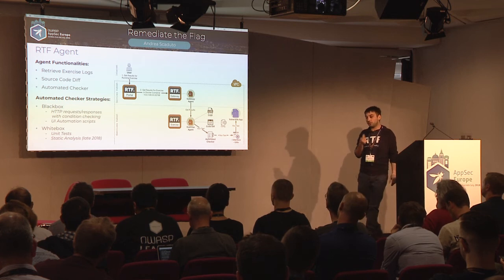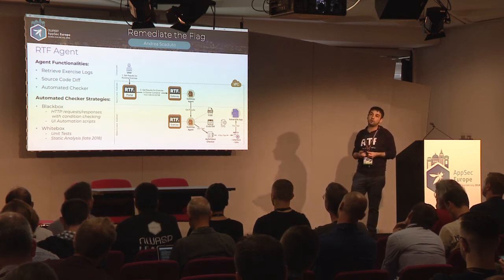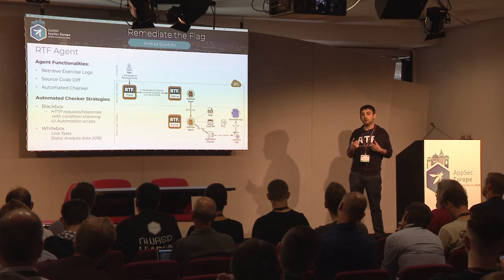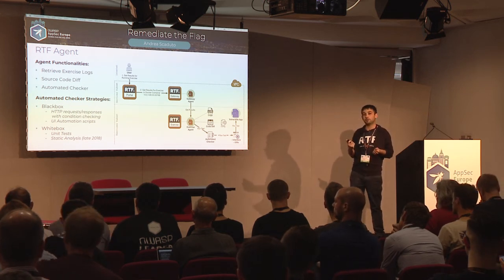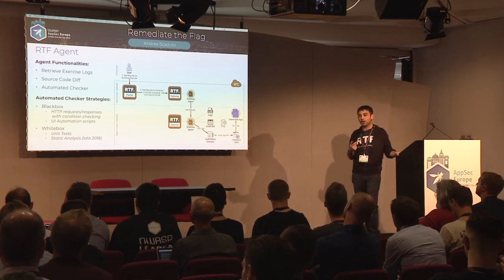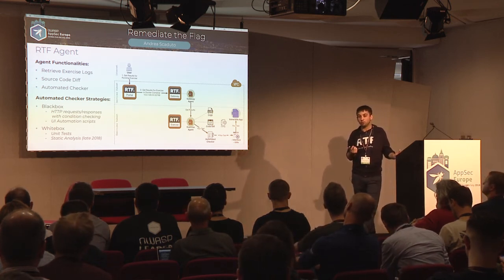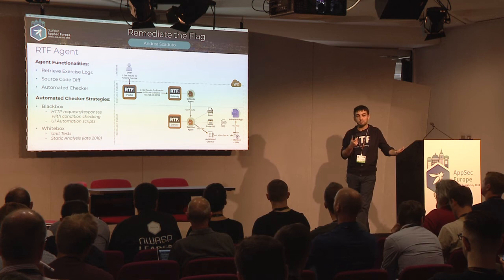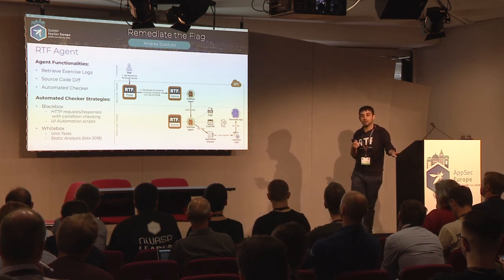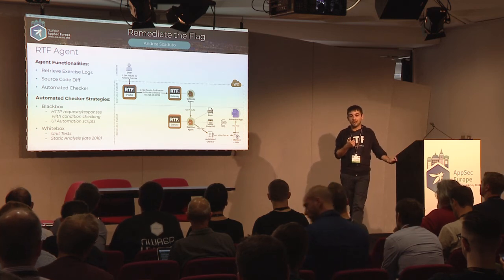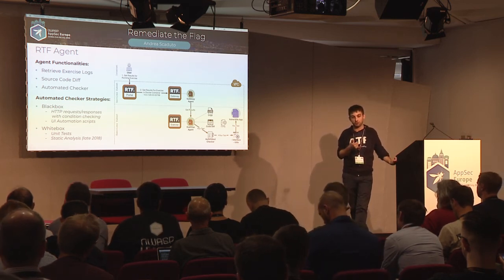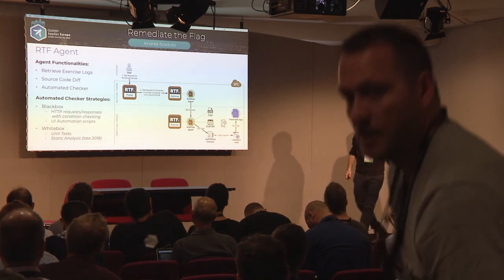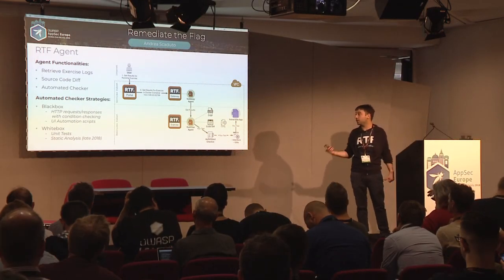These two examples use a black-box approach, inferring results from the behavior of the functionality. If writing a test for a secure coding exercise — such as creating a secure encryption function — it may be better to use a unit test, testing from an internal perspective to understand how the code reacts to specific conditions. I'm also planning to add support for static analysis at the end of every exercise within the RTF agent.